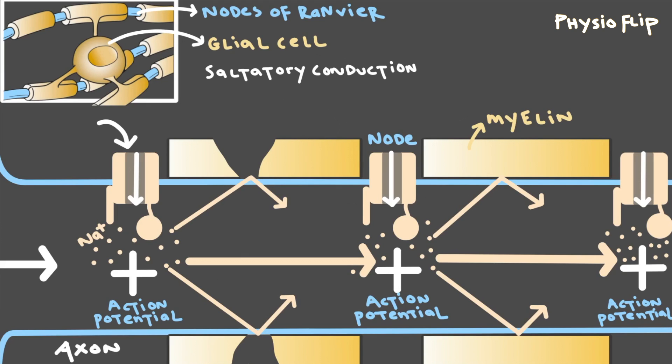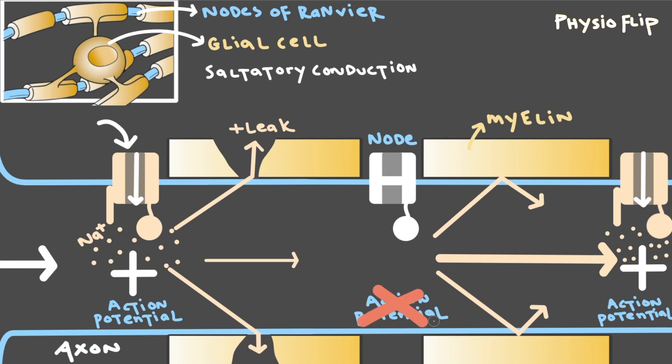If the myelin is damaged, which usually happens when the body's own immune system attacks these cells, this positive charge and these sodium ions can now leak out of the cell as they diffuse down the axon. This means the traveling signal will weaken much more than normal. As this damage gets worse, it might lead to the signal weakening so much that by the time it reaches the next node, it might no longer be strong enough to trigger the next action potential.